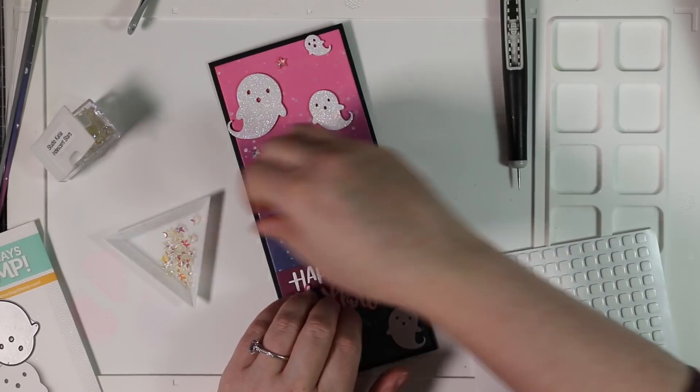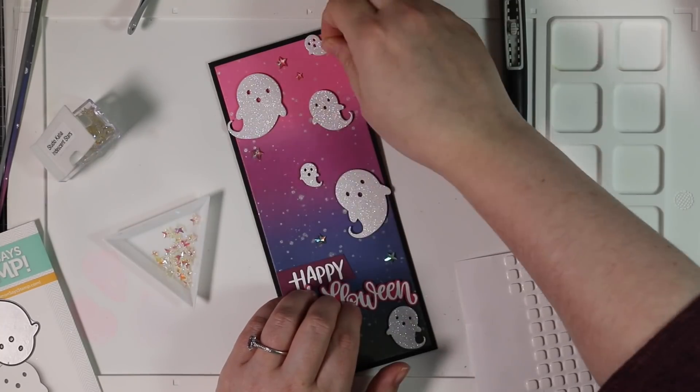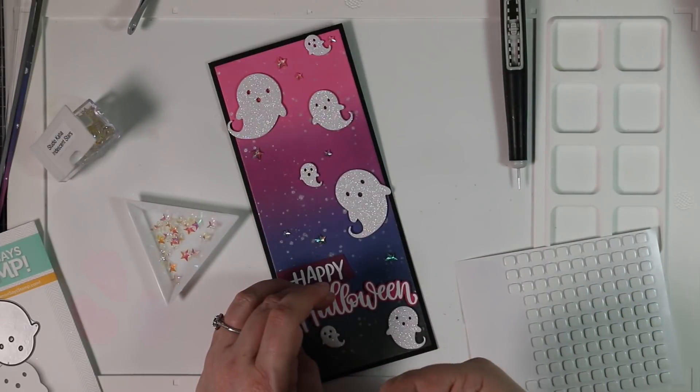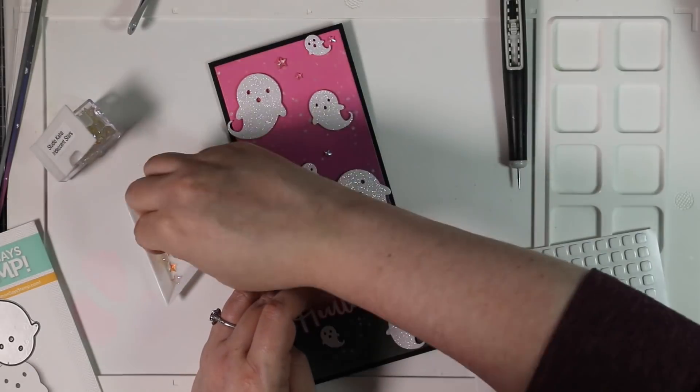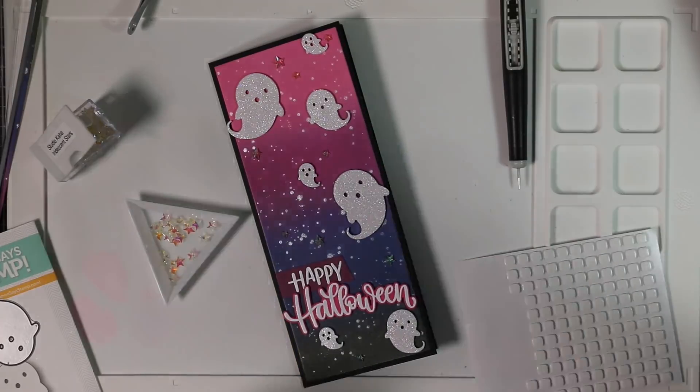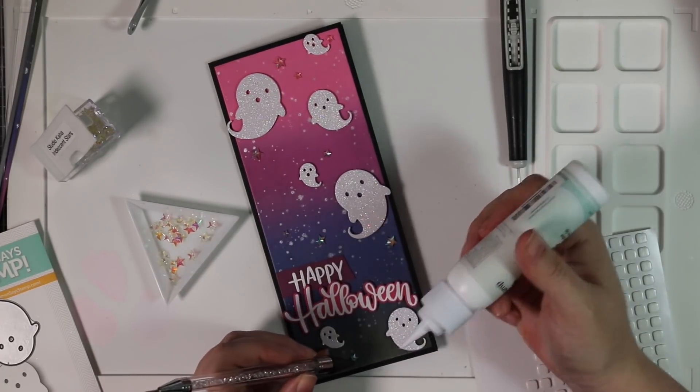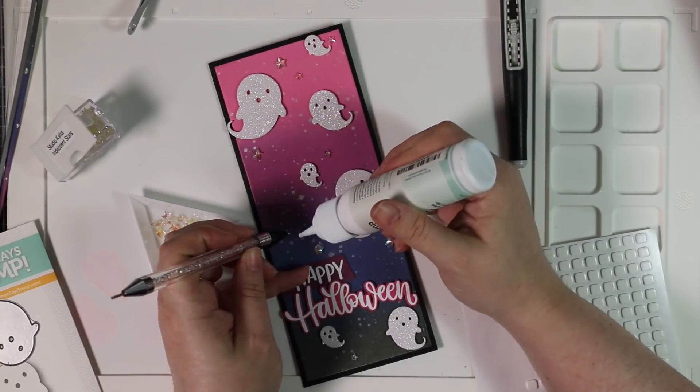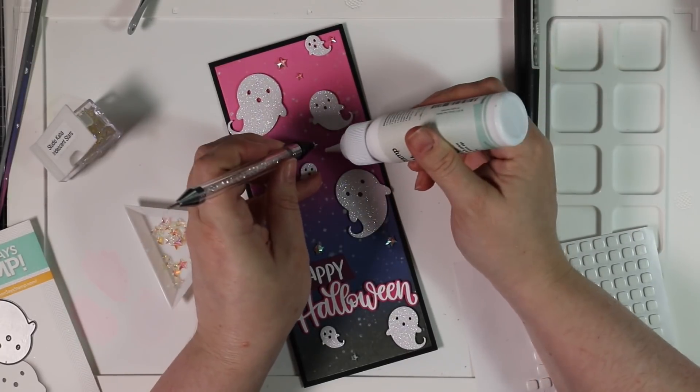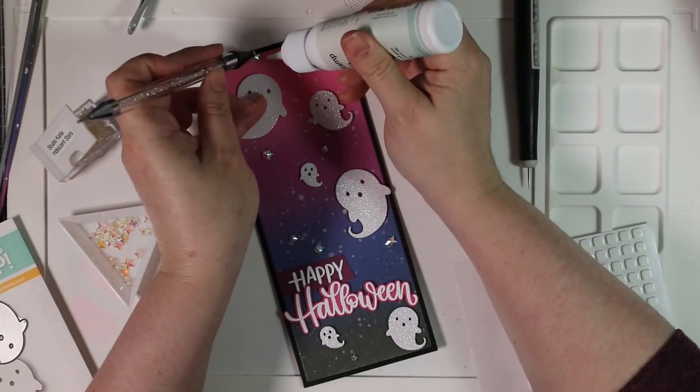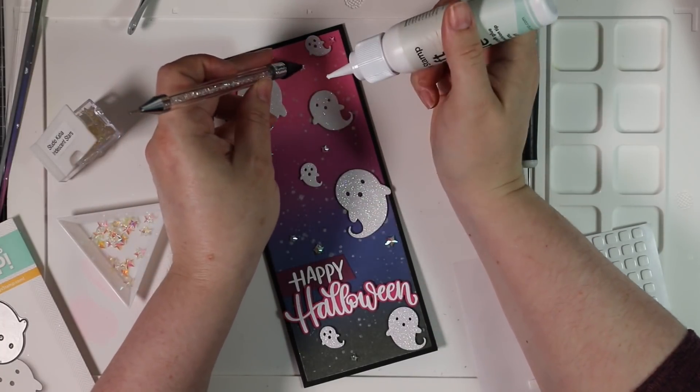So after I did that, of course I'm going to add just a little bit more bling. So I have my Studio Katia iridescent star crystals, another absolute favorite of mine that I've used a million times. Absolutely love these. So sprinkle those throughout this entire card front. And then I just adhere them into place with dabs of craft tacky glue, just picking them up with my jewel picker, press them into the glue, and then just got to let that glue dry.